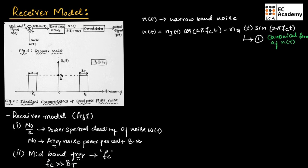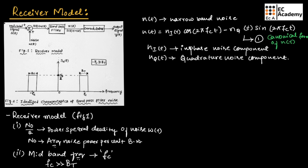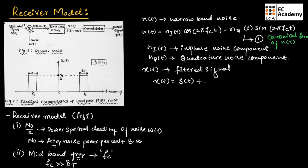This equation is known as the canonical form of n(t), where n_i(t) is the in-phase noise component and n_q(t) is the quadrature noise component. These two components are measured with respect to the carrier frequency. The filtered signal X(t) is available for demodulation, given as X(t) = S(t) + W(t).